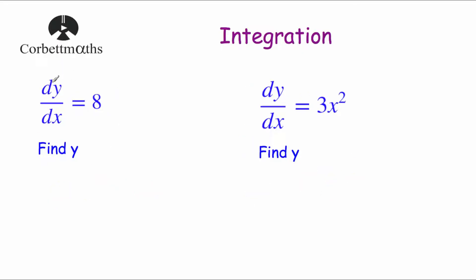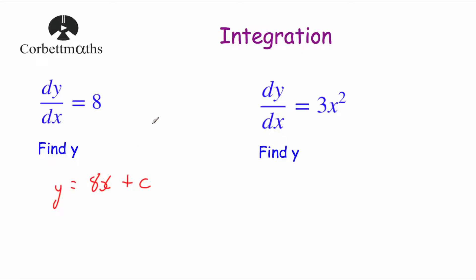This time we've got dy by dx equals a number, 8, and we're asked to find y. Whenever we integrate, we increase the power of x by 1. We've got no x's — it'll be x to the power of 0, since x to the power of 0 is 1. Increasing the power by 1 gives us x. So that'll be 8x, then divide by the new power: 8 divided by 1 is just 8. So y equals 8x plus c. Whenever you've got a number and you integrate, you just put your letter beside it — so 10 would become 10x plus c, and so on.